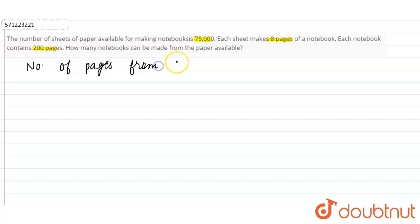So it is given that number of pages from one sheet is equals to 8 pages. We can make 8 pages from one sheet of paper and we have 75,000 such sheets, right? We have 75,000 such sheets.